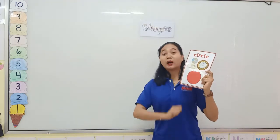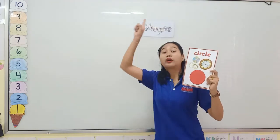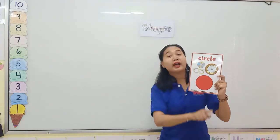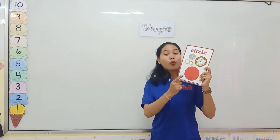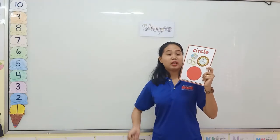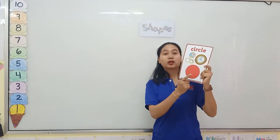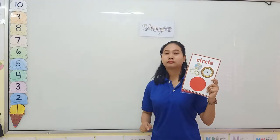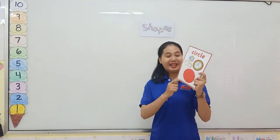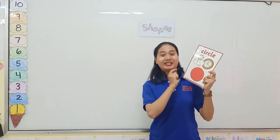The circle is round and round. Can you tell me what color is it? Good. It is red.